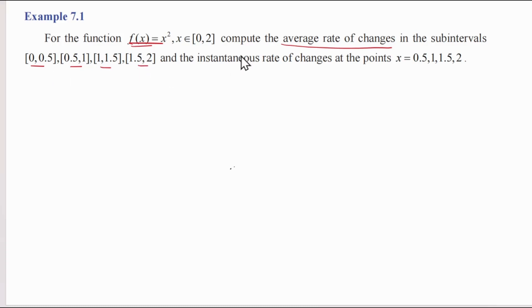For average rate of change in each interval, we identify two points: a starting point and an ending point. So you see there is a starting point and an ending point for each sub-interval.